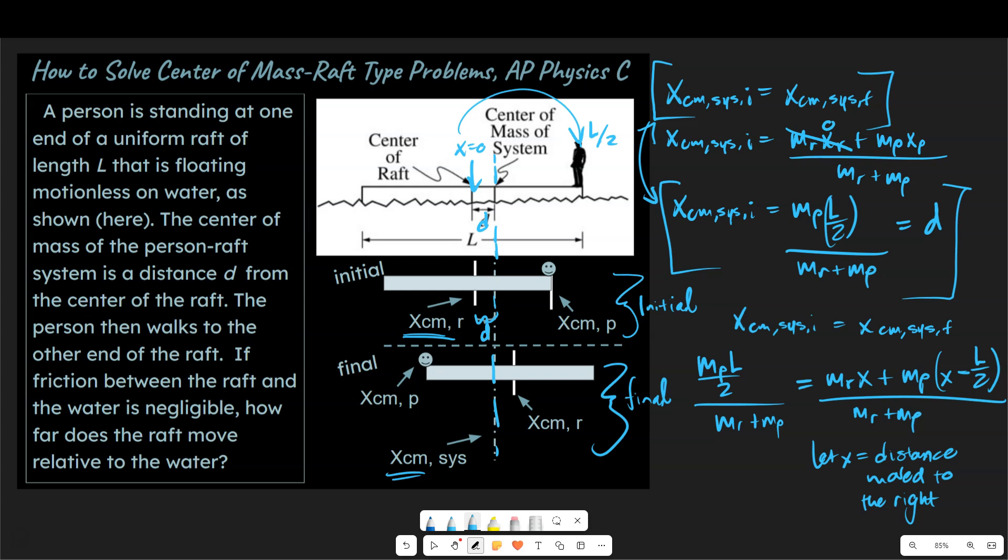And hopefully you can spot immediately what we can do algebraically to simplify the equation. We can get rid of these values over here. And to simplify, I'm going to write this over here. M_P times L over 2 is equal to mass of the person times (x minus L over 2).